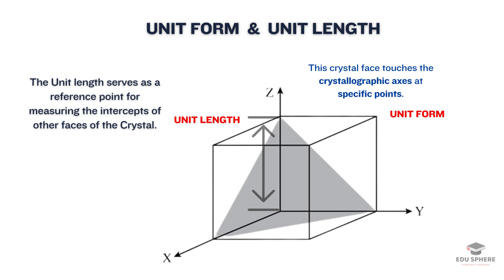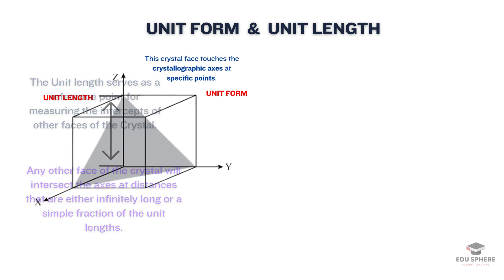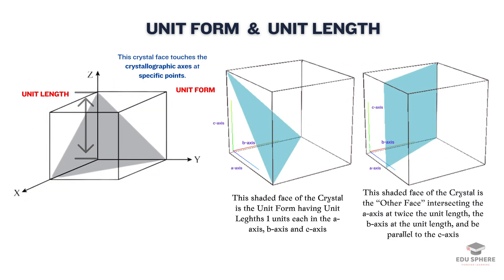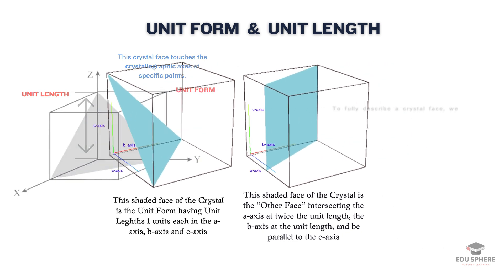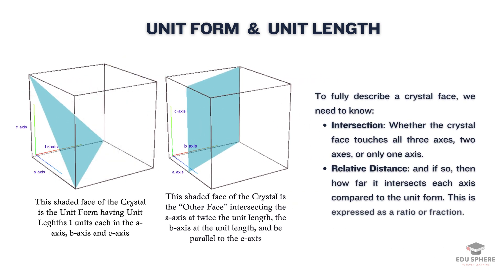Now any other face of the crystal will intersect the axes at distances that are either infinitely long or a simple fraction of the unit lengths. For example, a face might intersect the a axis at twice the unit length, the b axis at the unit length, and run parallel to the c axis. So to fully describe a crystal face, we need to know whether it touches one, two, or all three axes.